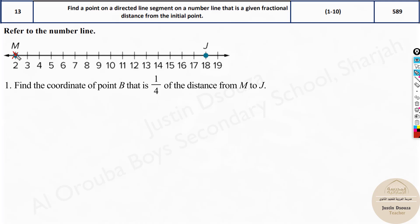They have given a point M and J and we need to find a point which is one-fourth, that is, one quarter the distance of this total one.